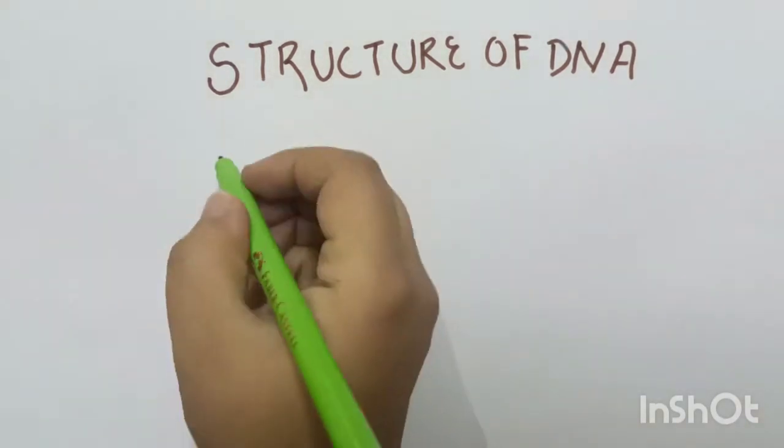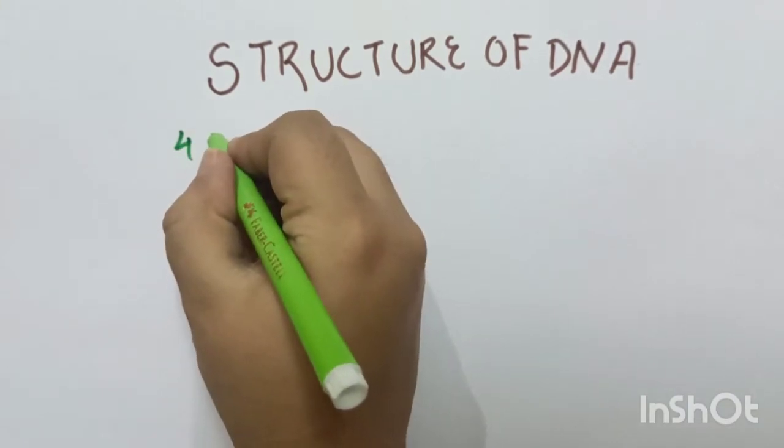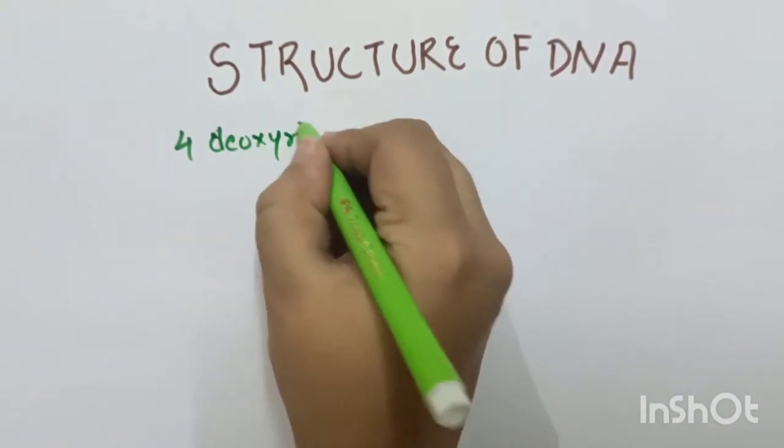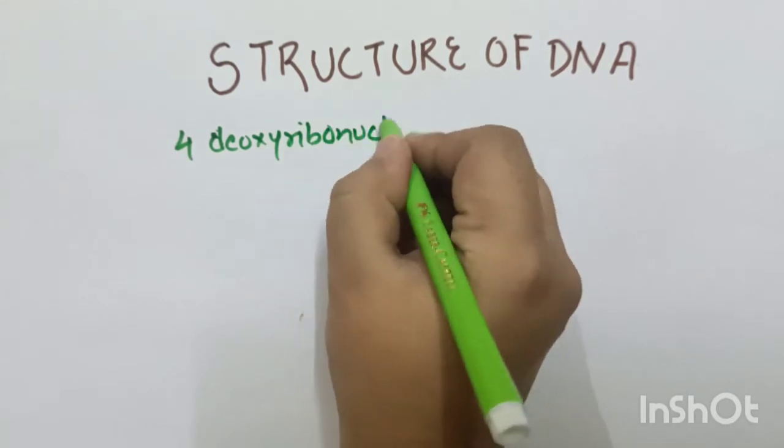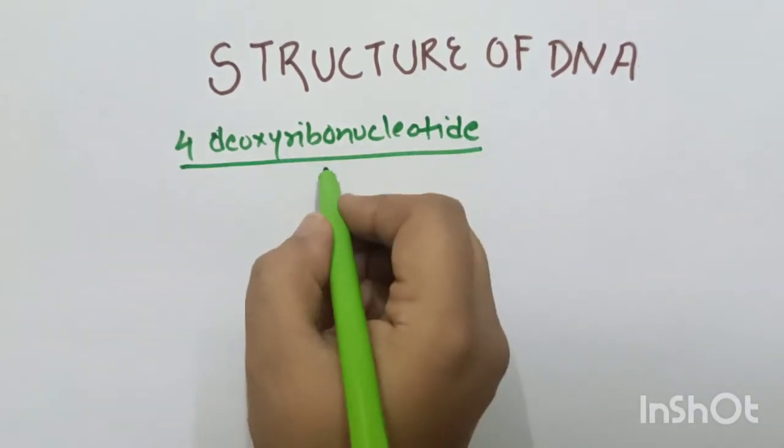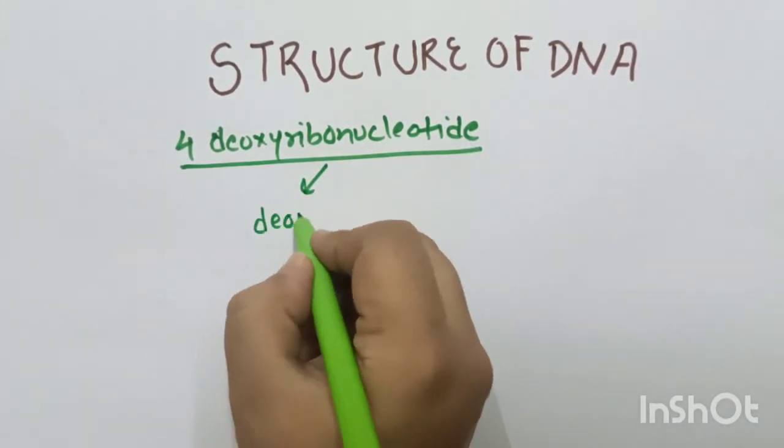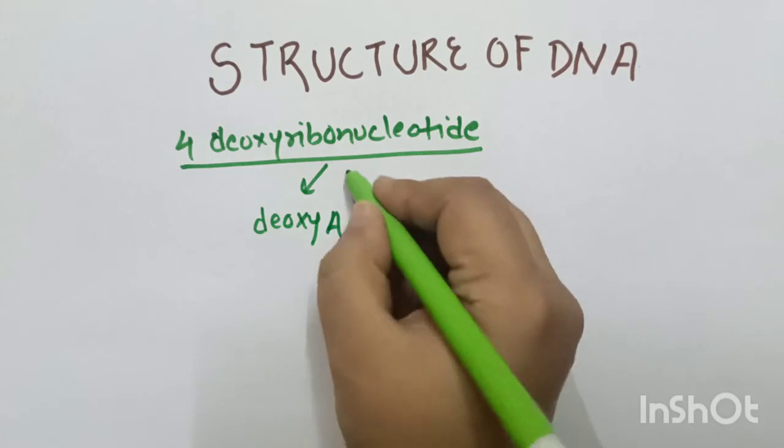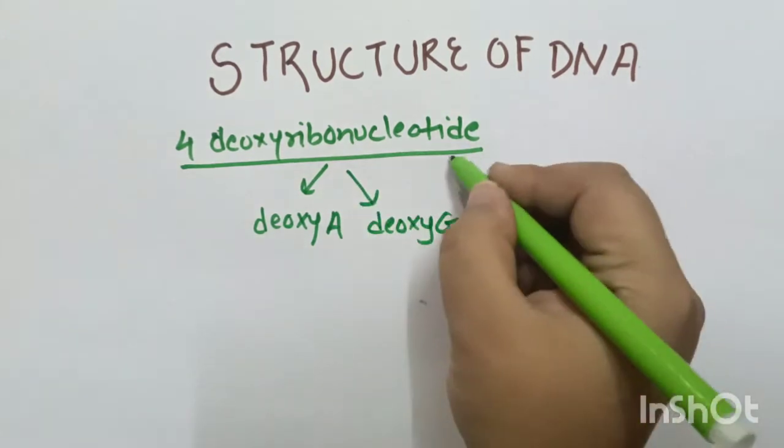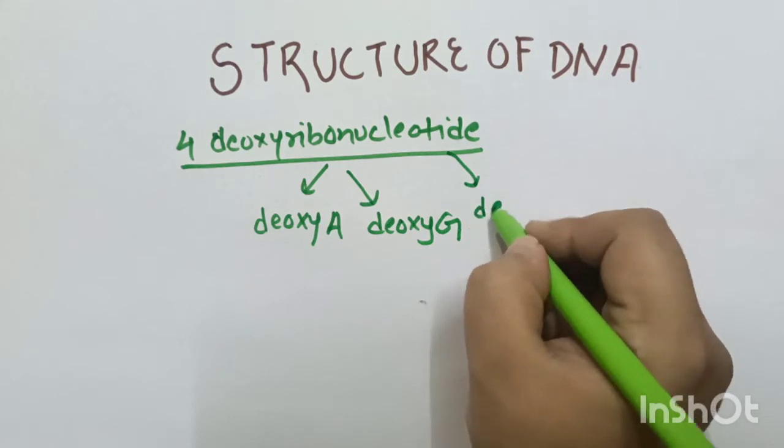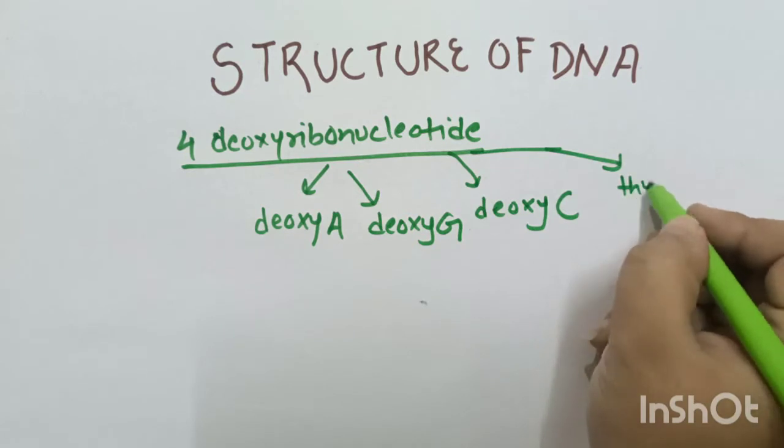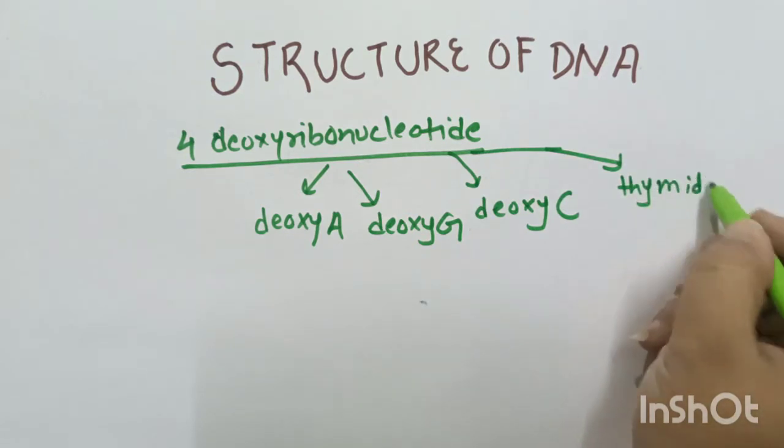As you know, DNA is composed of four deoxyribonucleotides. These four deoxyribonucleotides are: deoxyadenylate, deoxyguanylate, deoxycytidylate and thymidylate.